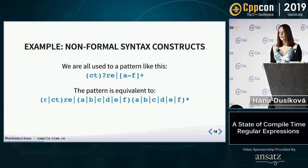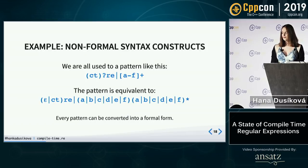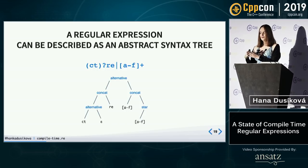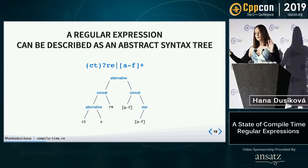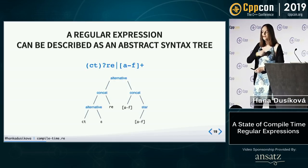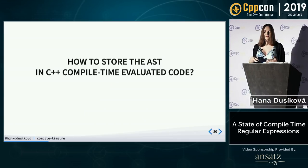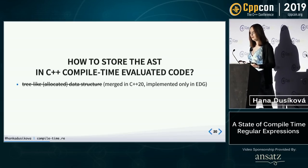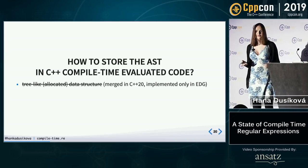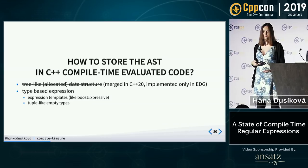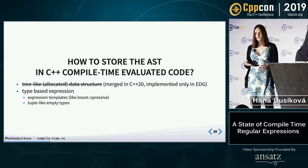The regular expression itself is an AST. The alternation has the highest priority. You can see it's one regular expression or another; the first is a concatenation of things — it's just a tree. To build the tree at compile time, you need to generate it somehow. You can use tree-like data structures with allocation in C++20, implemented only in EDG, so instead I went with type-based expressions — specifically tuple-like empty types.